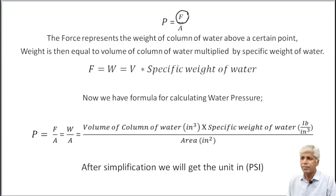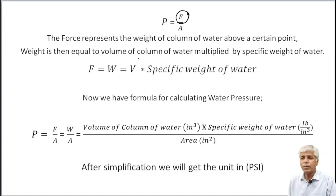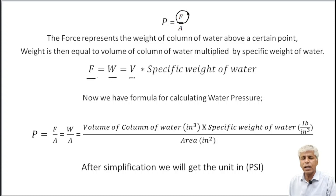This force F represents the weight of the column of water above a certain point. Weight of the water column is equal to the volume of the column of water multiplied by the specific weight of water. So F is equal to W, and W equals volume of column of water multiplied by the specific weight of water.